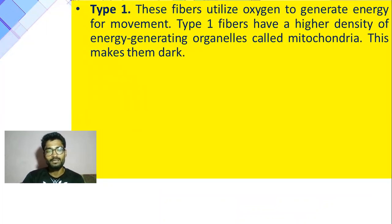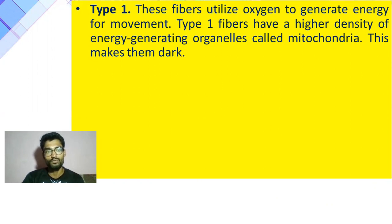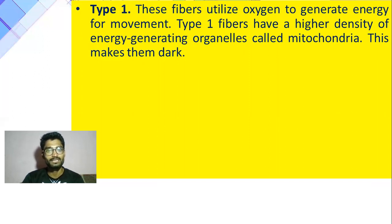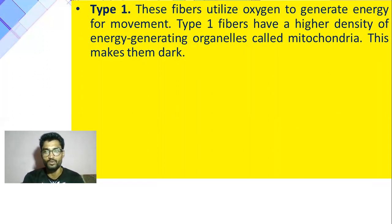Let me revise this once. These fibers utilize oxygen to generate energy for movement. जो भी हम movement कर रहे होते हैं उन movement को run करने के लिए जो energy की जरूरत होती है, उसमें Type 1 यानि slow twitch muscle fiber में oxygen की जरूरत होती है। Type 1 muscle fiber में high density of energy generating organelles होते हैं — mitochondria को body का storehouse भी बोला जाता है।